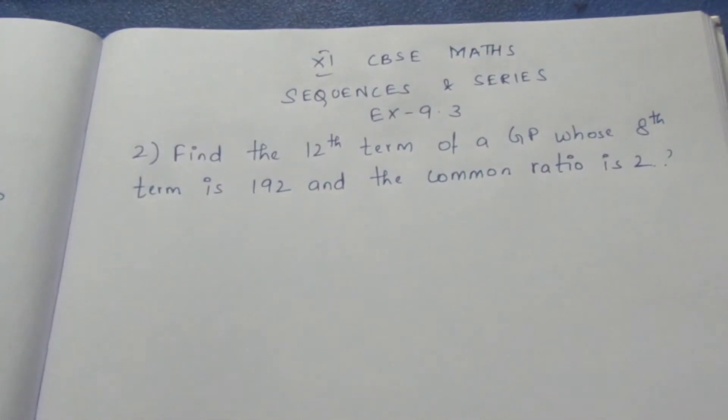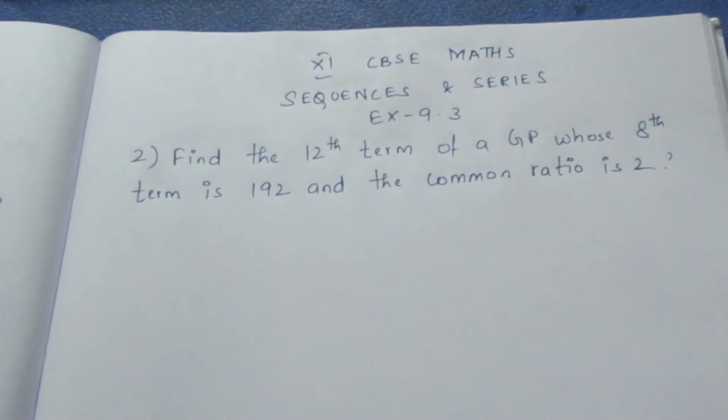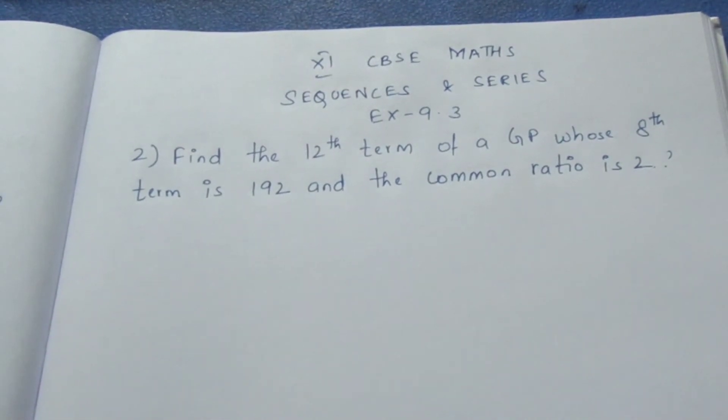Hello viewers, I am Mike Lee. Today we are going to see Class 11 CBSE Maths, sequences and series, Exercise 9.3, Question 2. Let's see the question: Find the 12th term of a GP whose 8th term is 192 and the common ratio is 2.